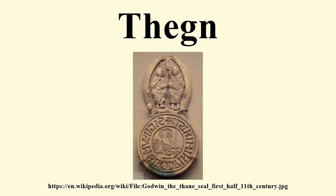In a document known as Gethinkitha, we learn: 'And if a Ceorl throve so that he had fully five hides of his own land, church and kitchen, bell house and burgate seat, and special duty in the king's hall, then was he thenceforth a Thane right worthy.' A hide of land was considered sufficient to support a family. And again: 'And if a merchant throve so that he fared thrice over the wide sea by his own means, then was he thenceforth a Thane right worthy.'